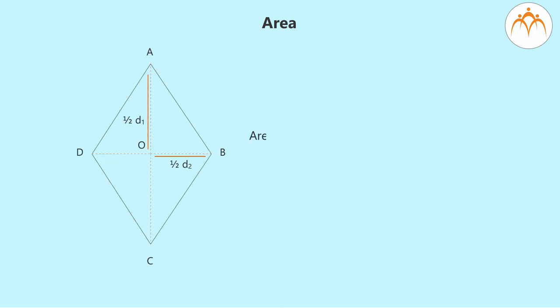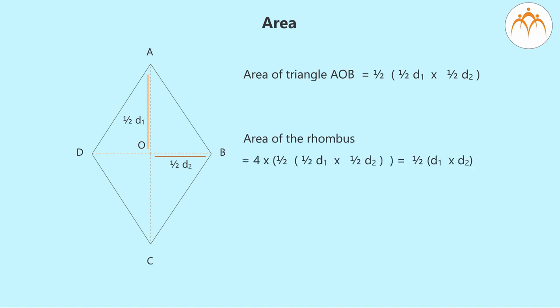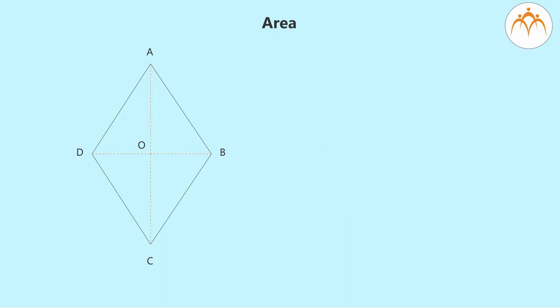Area of a triangle is equal to half of half d₁ into half d₂. Area of the rhombus is four times half of half d₁ into half d₂, which gives half into d₁ into d₂, which is equal to product of diagonals divided by 2.